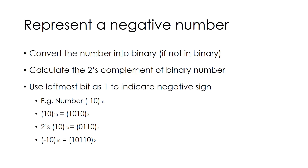We need to make use of the leftmost bit to indicate the sign of the number. If it is a negative number, we use 1; if it is a positive number, we use 0 to represent it. In the example given below, number 10 is first converted into binary, then the two's complement of 10 is calculated, and finally the leftmost bit is set to 1 to indicate that the number is negative.